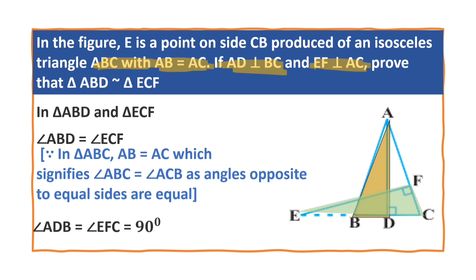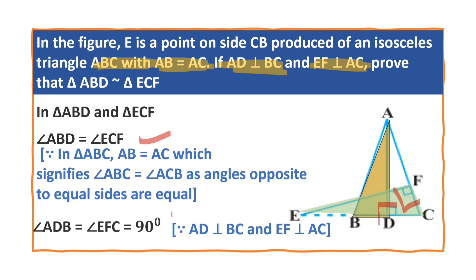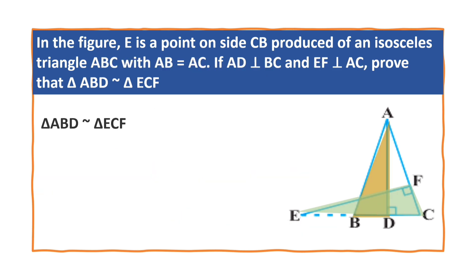Since AD is perpendicular to BC and EF is perpendicular to AC, we have angle ADB equal to angle EFC, that is equal to 90 degrees. Because AD is perpendicular to BC and EF is perpendicular to AC. So, according to the angle-angle criterion, triangle ABD is similar to triangle ECF by the angle-angle criterion.